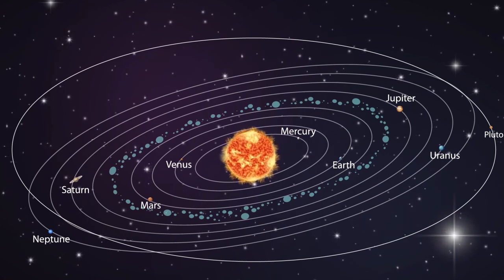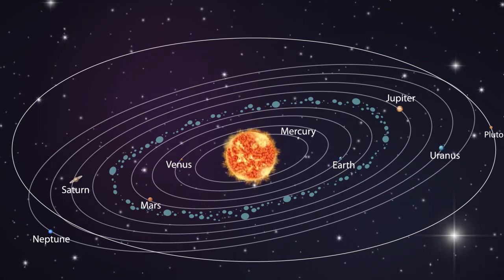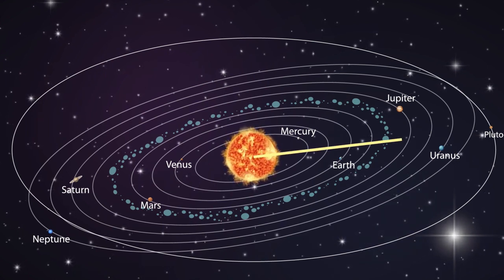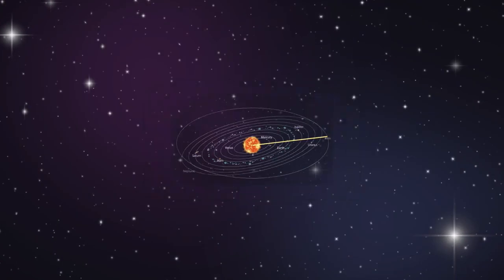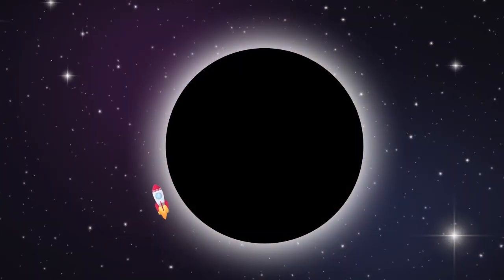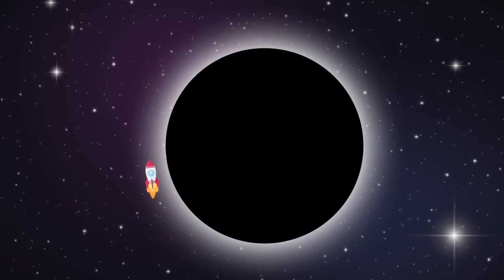Calculations show that the diameter of black hole Phoenix A is 590 billion kilometers long, or the equivalent of 100 times the distance from Earth to Pluto. If we had the technology to travel at the speed of light, we would still need 71 days to circle the black hole.